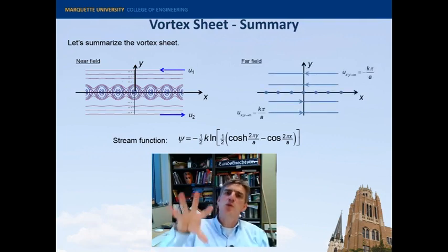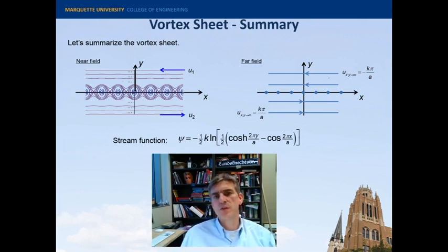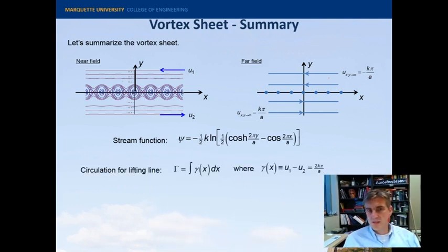And then in the far field, when we zoom way out, asymptotically, the streamlines become flat, and we end up with a shear flow moving to the left above the y positive direction and moving to the right in the negative y direction. We have a definition of what the circulation is. We define gamma, which is really the strength of this vortex sheet, 2k pi over a.